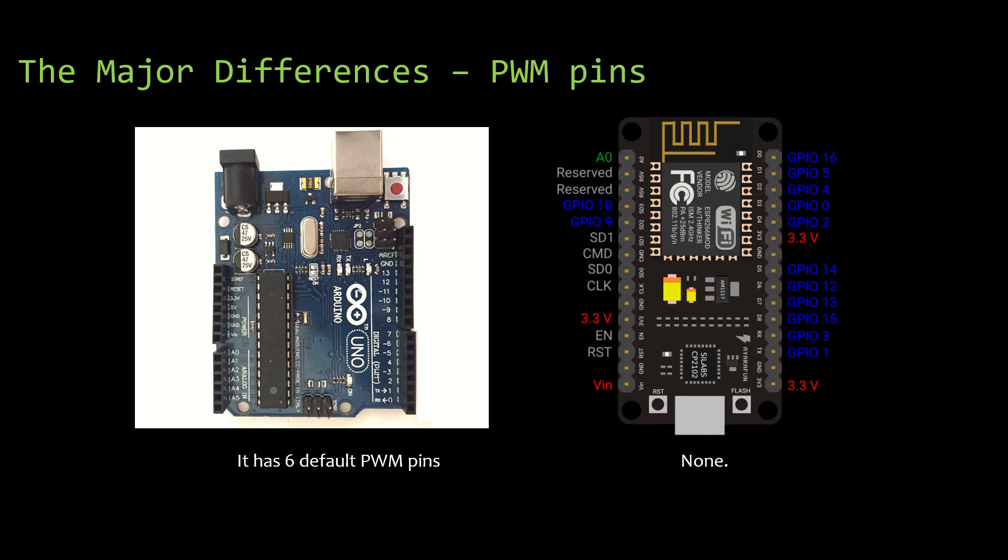The next one is the PWM pins. Arduino UNO has got six default PWM pins whereas in NodeMCU we do not have support for PWM pins at all.